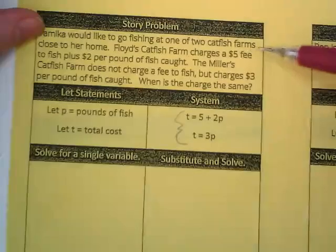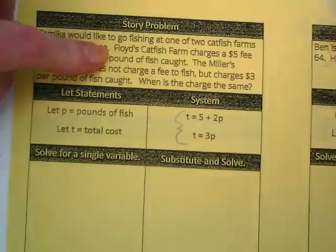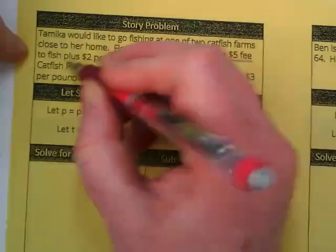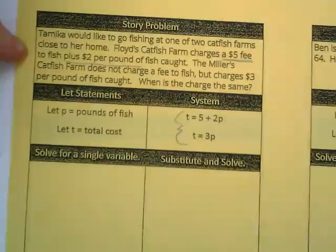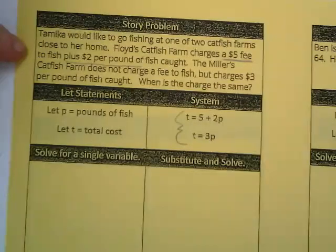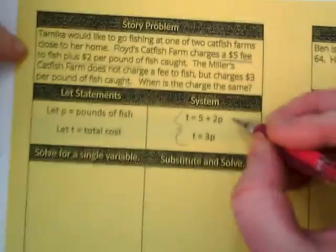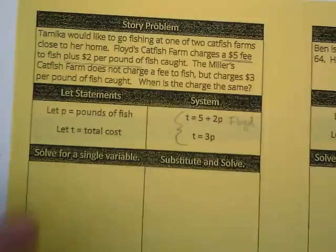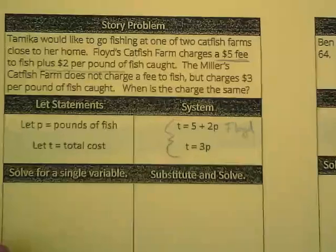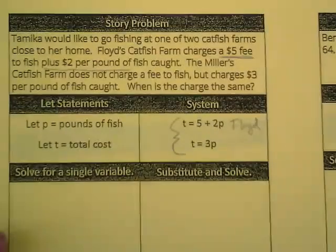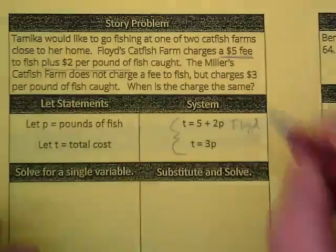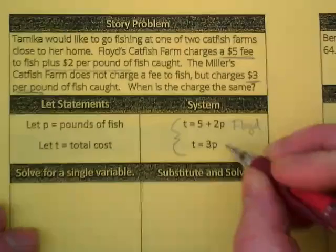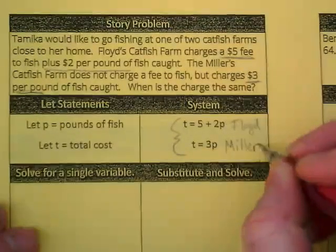So Tamika would like to go fishing at one of two catfish farms close to her home. Floyd's catfish charges a $5 fee plus $2 per pound. Which equation is that? The first one. Let's put next to it Floyd. The Miller's catfish farm does not charge a fee to fish but they do charge $3 per pound of fish caught.